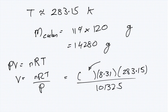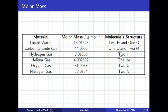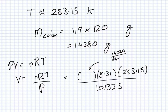So how many moles do I have here? Well, that would be 14,280 grams. And then how many grams in a mole of carbon dioxide? 44.0095. So that goes in here for the n.